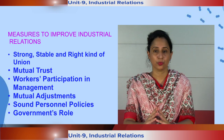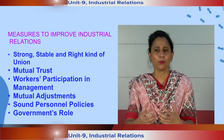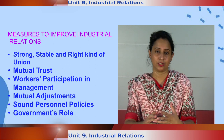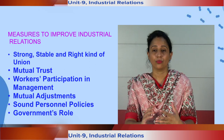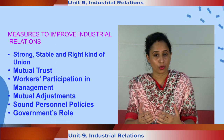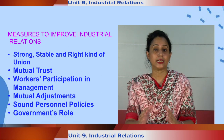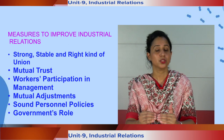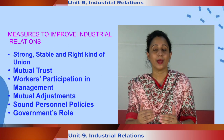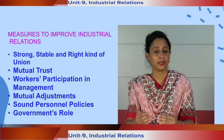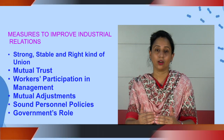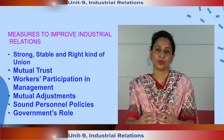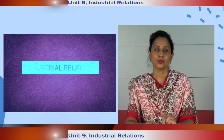Lastly, the government has a major role to play. The government should play an important role in promoting industrial peace. It should make laws for the compulsory recognition of the representative union in each industrial unit. And it should interfere to settle disputes if the management and the workers are unable to settle their disputes internally. This will lead to improved industrial relations.